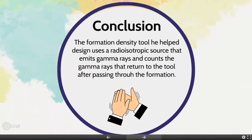In conclusion, the formation density tool uses a radioisotopic source that emits gamma rays and counts the gamma rays that return to the tool after passing through the formation. Thank you for your attention. We hope that you will find this video very interesting and helpful.